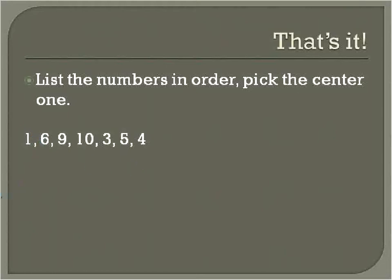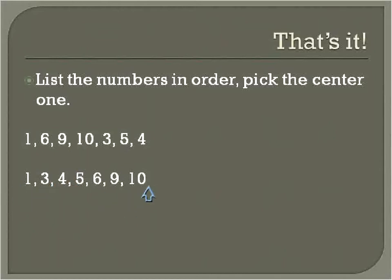So we have a list of numbers here. We list them first in order, rearranging so they go from least to greatest. And now we just pick the one right in the center. Five — five is our median.